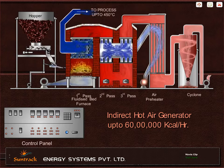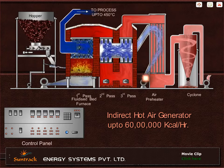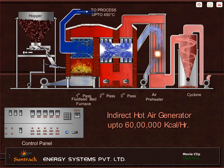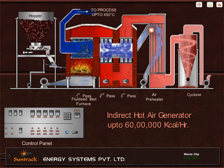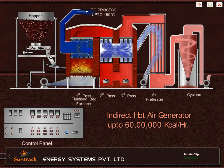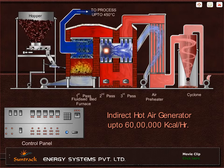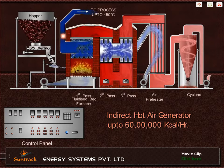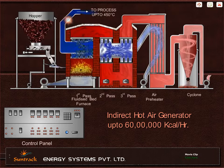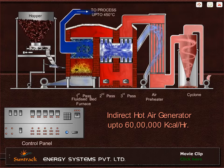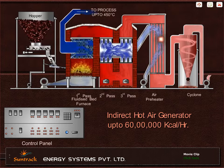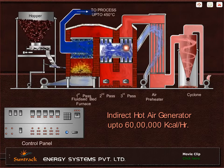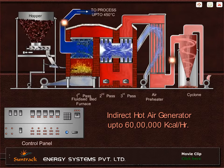Clean air from the atmosphere is drawn by the clean air fan and blown to the air preheater where it gets heated up, then passes through the third pass, second pass, and first pass before leaving the system for process requirements. Clean air is heated counter-currently by combustion flue gases to achieve higher efficiency.